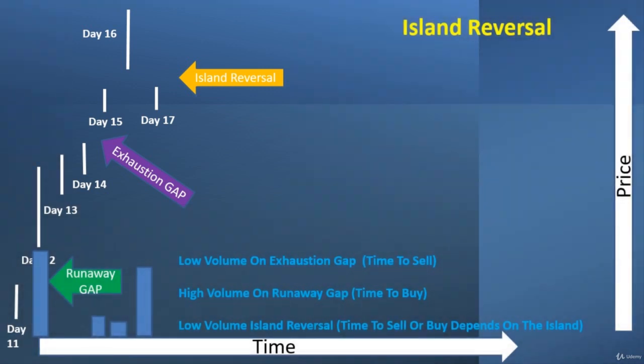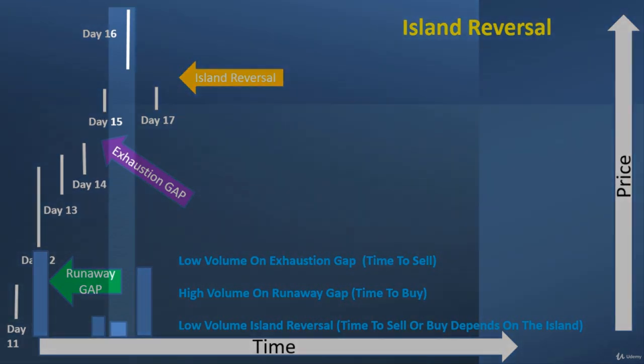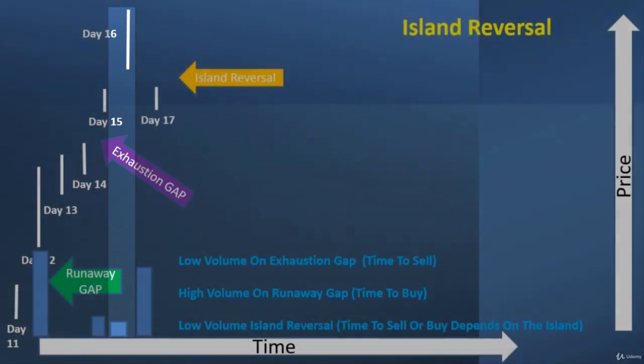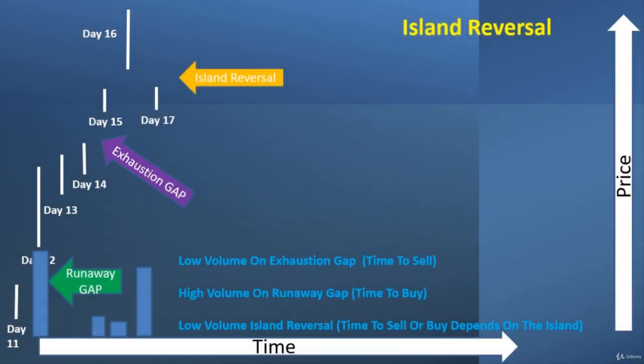So you have your exhaustion gap with low volume, and then all of a sudden there's a whole other big gap trying to push prices even higher. That's where you might see even lower volume on that bar in between — because it really is truly exhaustive. You're really on an island, the last person out there trying to buy. You might have a couple of sellers, but it's really already post the exhaustion phase.